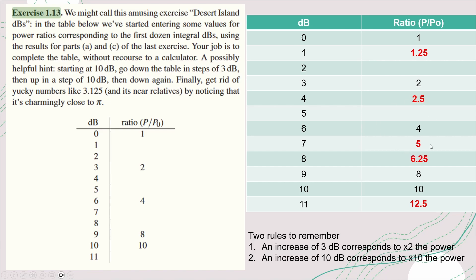Doing the same thing again, decrease the dB by 3 and we get 3.125 which is approximately pi which the author points out in the question. And now we have one more cell to fill in which is a decrease of 3 dB again, we can put that as approximately pi divided by 2. And this is the solution to this question.